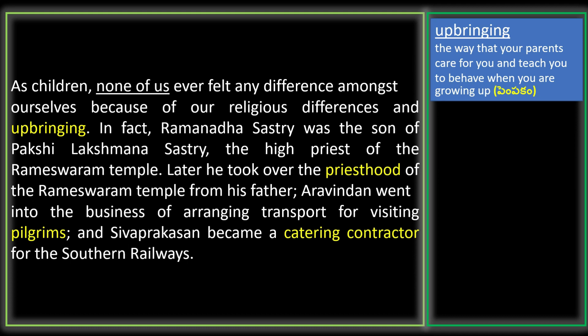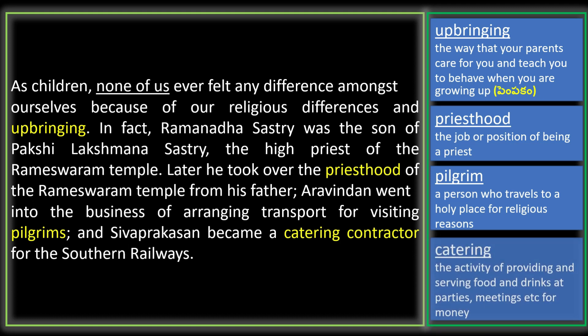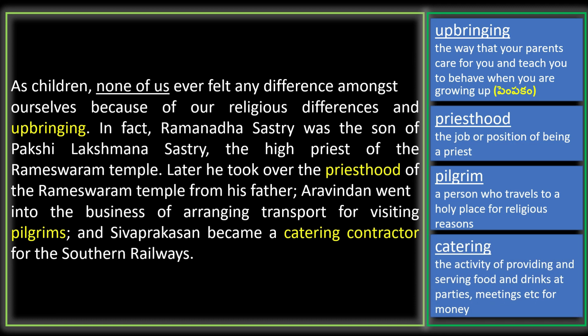Aravindan went into the business of arranging transport for visiting pilgrims — people who travel to holy places for religious reasons. He arranged transport for the people who visited the Rameshwaram temple. Siv Prakasan became a catering contractor for the southern railways. Catering is the activity of providing and serving food and drinks — here, providing food for the southern railways.